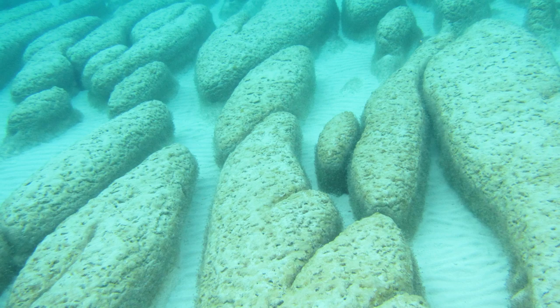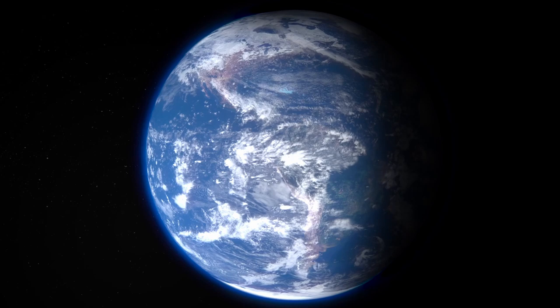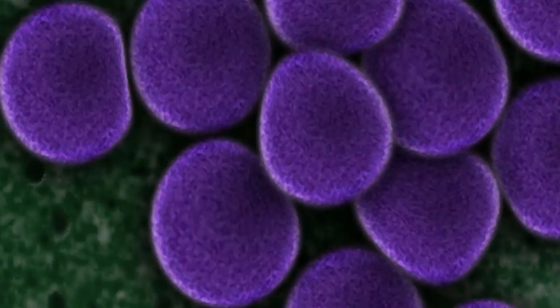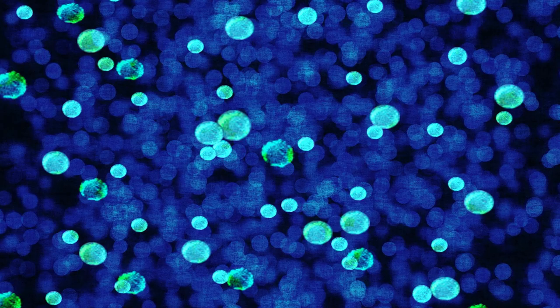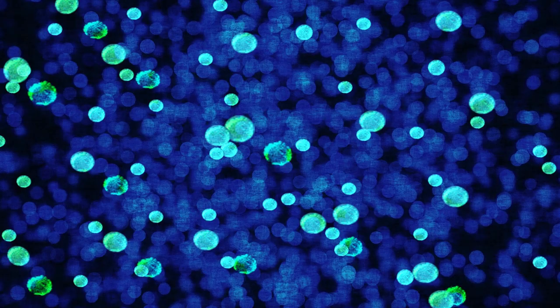But recent estimates of the microbial cells in the oceanic sediments put this at 10 to the 29. But in another context, 10 to the 29 cells is only thought to be about 0.6% of the total biomass on the whole planet. The next question becomes what type of creatures are they, and how did they end up here?